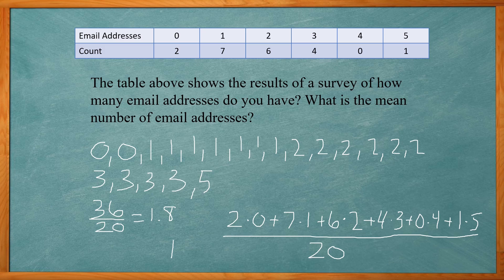And then again we get 1.8. So how you calculate the mean for a frequency distribution is multiply the count times the value, so basically multiply them all together and add them together.